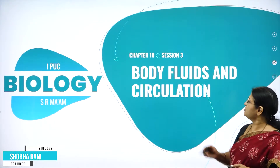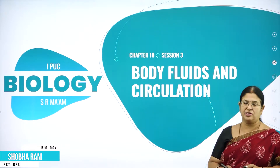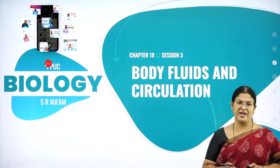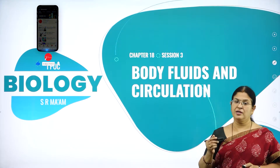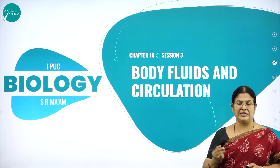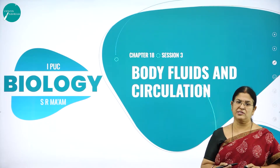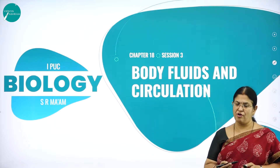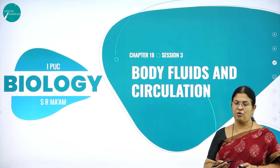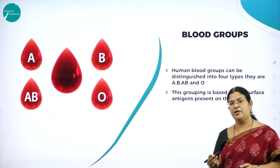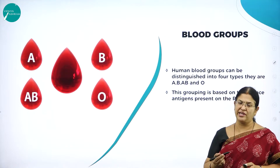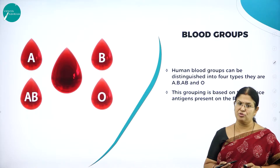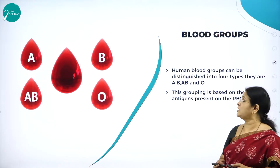Hello everyone, welcome back to session three of this chapter called Body Fluids and Circulation. I'm Bishobarani from the Department of Biology at the Ashram Pre-University College, the Temple of Excellence. In my last session, we were studying about the blood corpuscles — namely the RBC (erythrocytes), WBC (leukocytes), and thrombocytes (blood platelets). WBC is divided into granulocytes and agranulocytes.